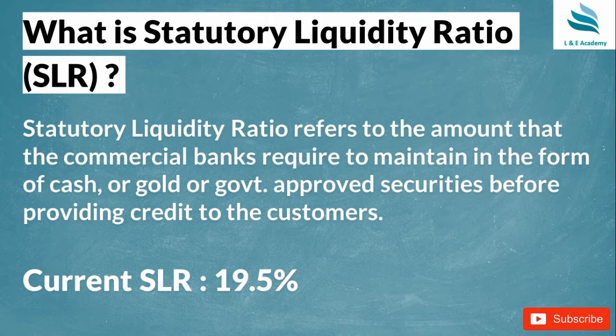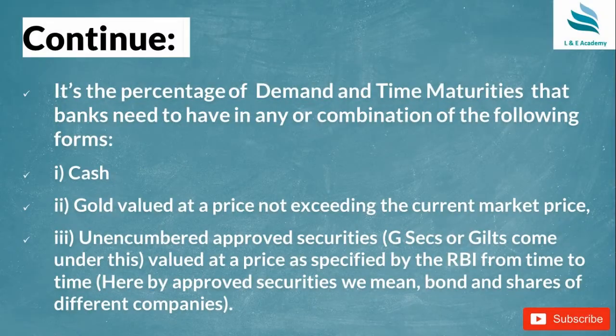So the bank's opportunity to earn on 100 rupees has now been reduced to 79.5 rupees. This is the core concept you need to understand. SLR is all about commercial banks keeping a certain percentage — fixed by RBI — with RBI as a security, in case customers need their deposited money returned.